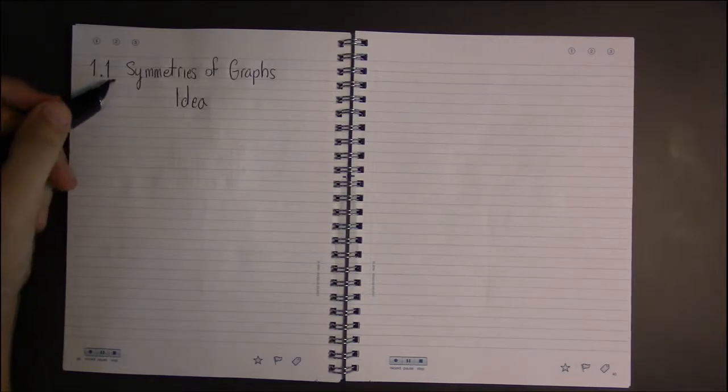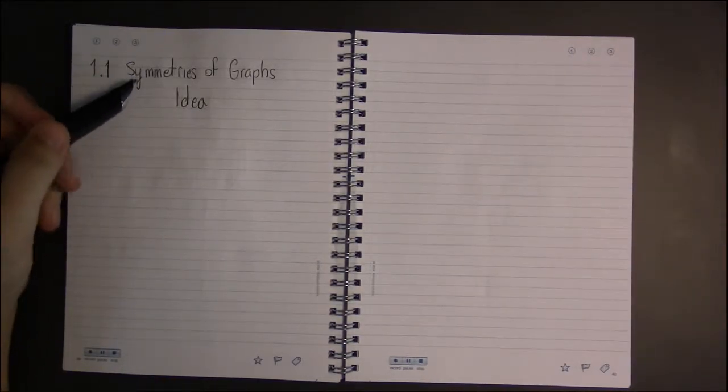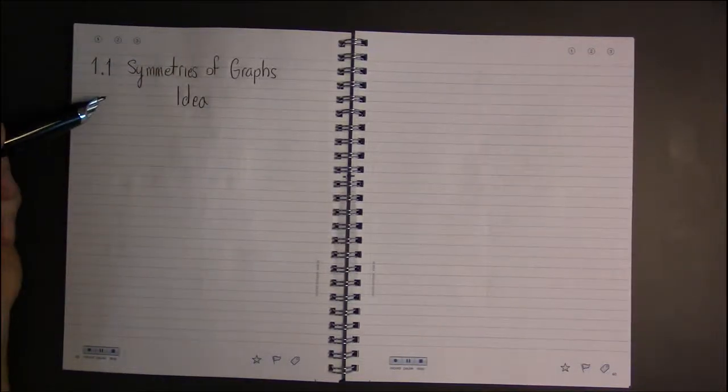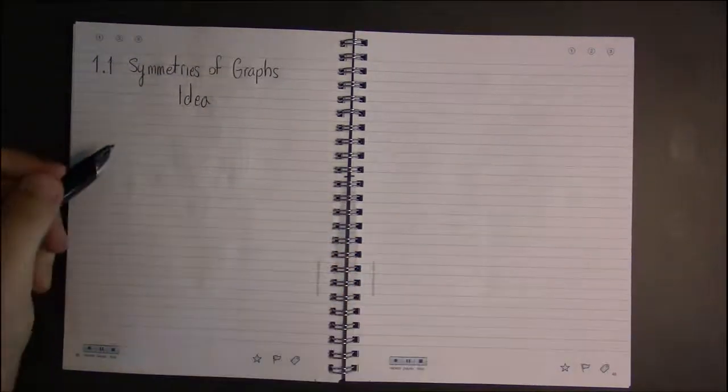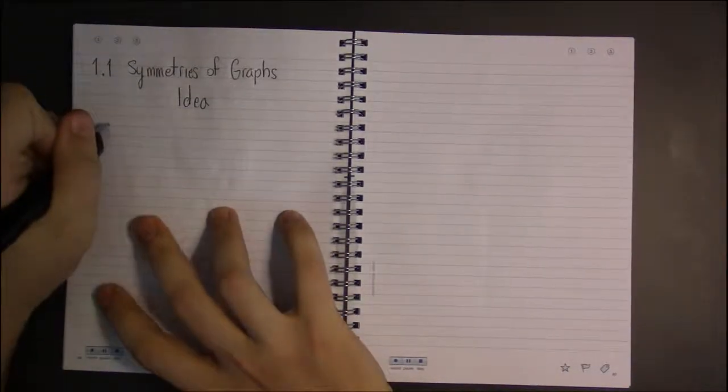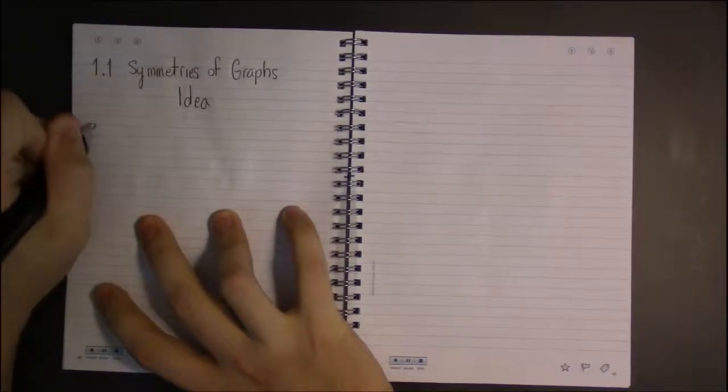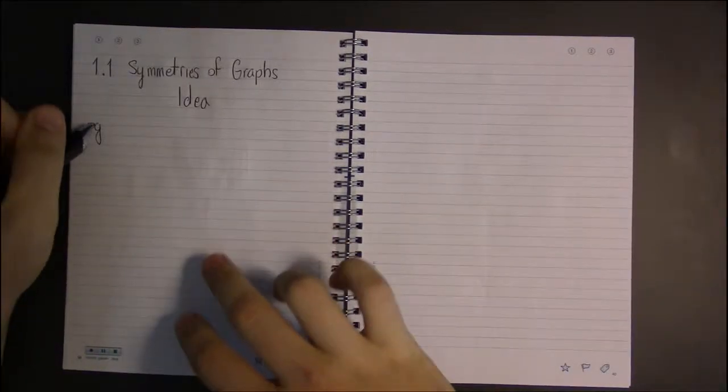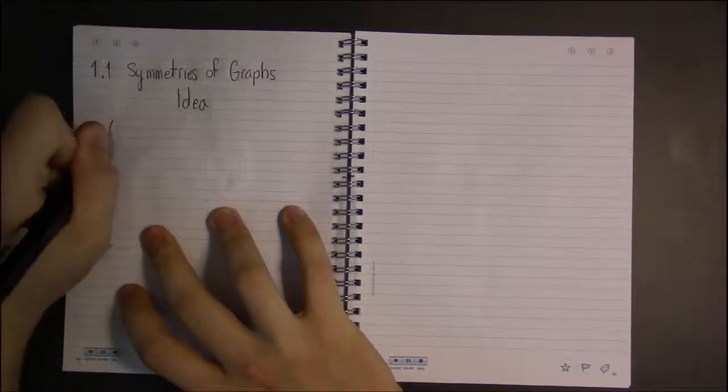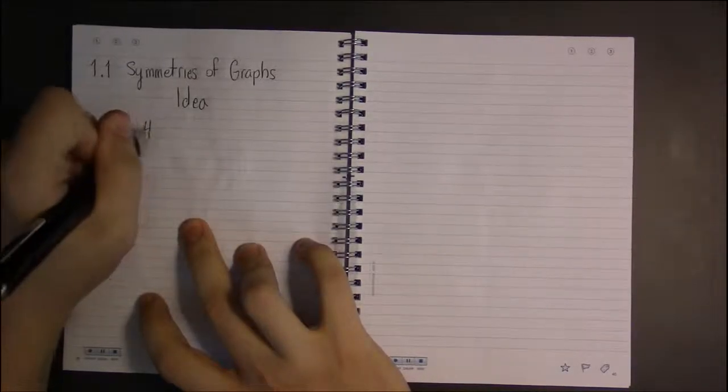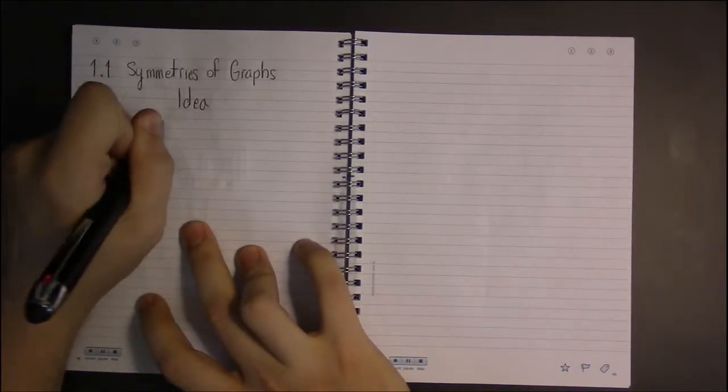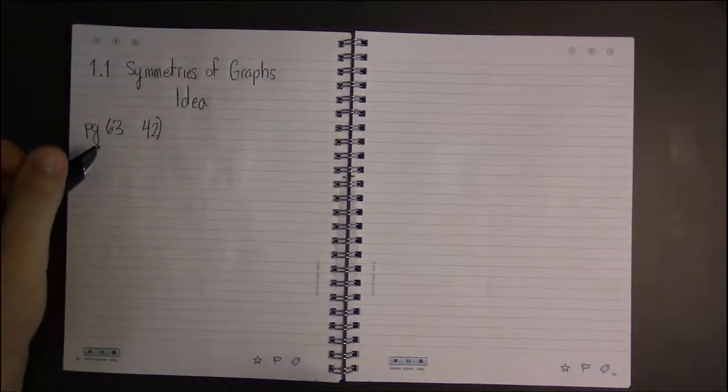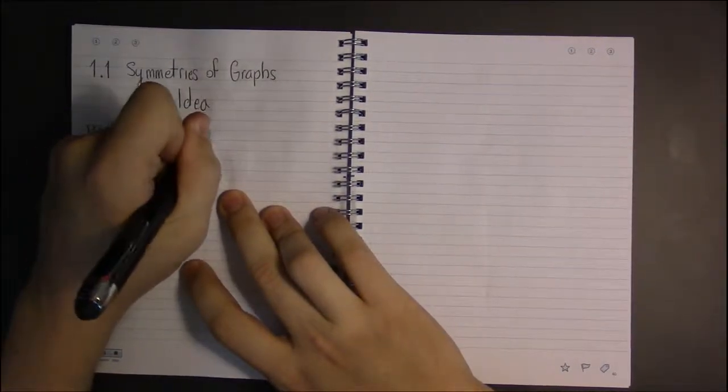Next, I want to talk about the various symmetries that graphs can have in section 1.1. This is an idea best expressed through an example, so I'm on page 63 looking at problem number 42.